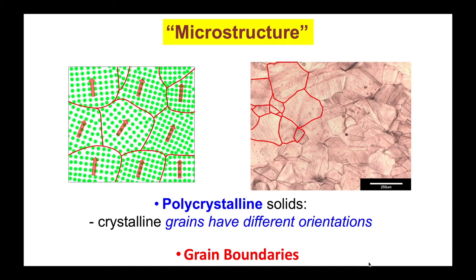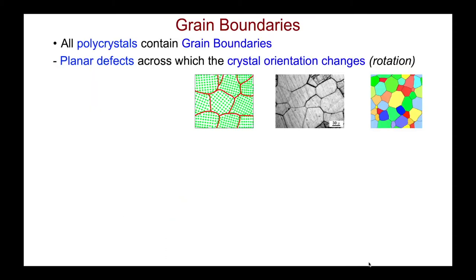Microstructure is an extremely important part of our field, and when we think about the microstructure of a polycrystalline solid, of particular importance are grain boundaries. The purpose of this video is to review some aspects of special grain boundaries. All polycrystalline materials contain grain boundaries, which are planar defects, and across those defects the crystal orientation changes through a rotation.